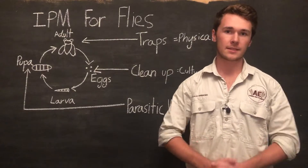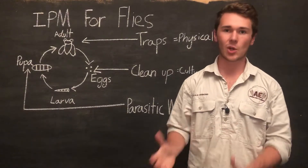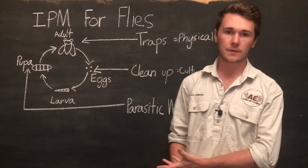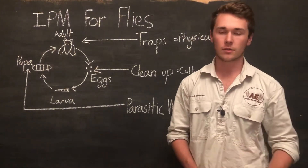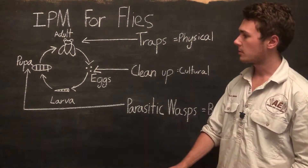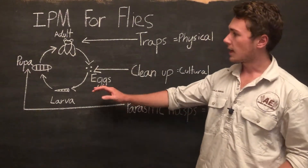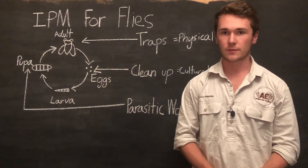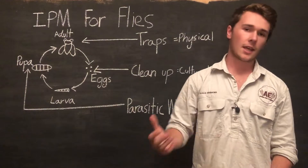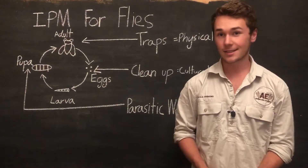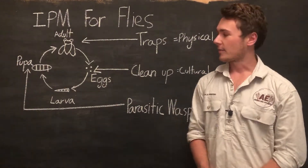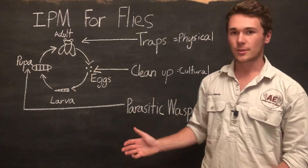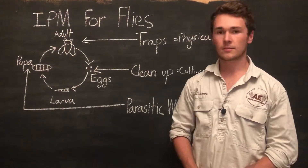The best place to start when designing an integrated pest management is with the life cycle of your pest. For this example, we're using flies, and we're going to develop an integrated pest management for flies, because recently here we're having a fly problem. It's really worthwhile talking about flies because everyone hates flies.